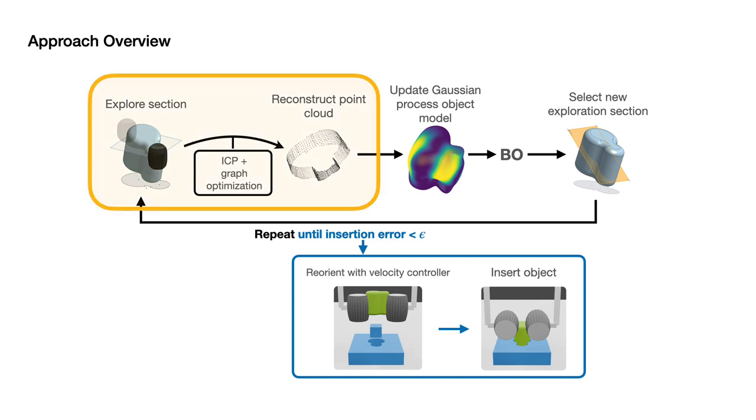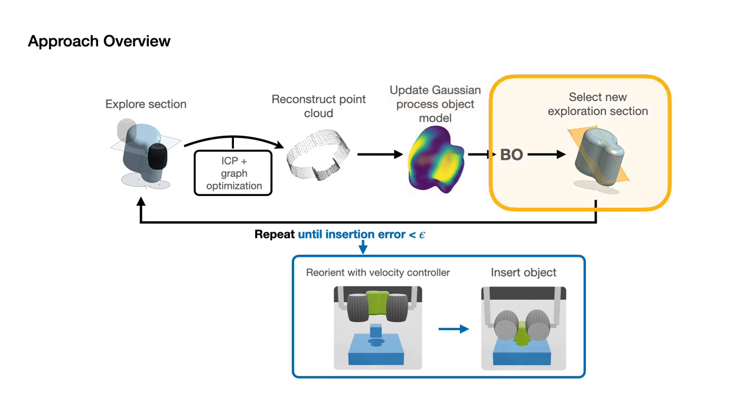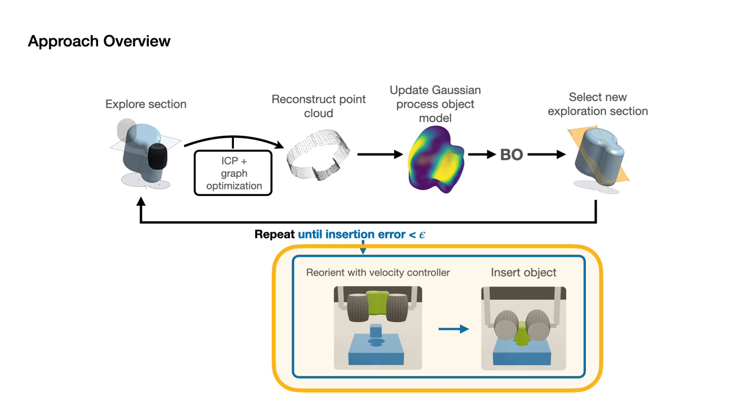The key components of our method consist of exploring a section of the object, updating a probabilistic model of the object's shape from the collected tactile data, and using Bayesian optimization to select a new section to explore. We repeat this until we have sufficient confidence that we've found an orientation in which the object will fit into a given hole.